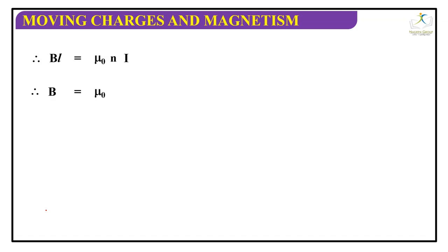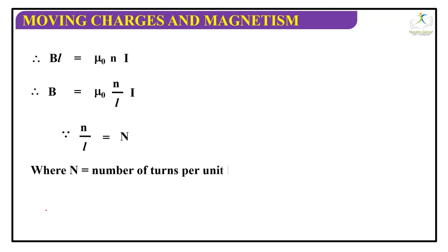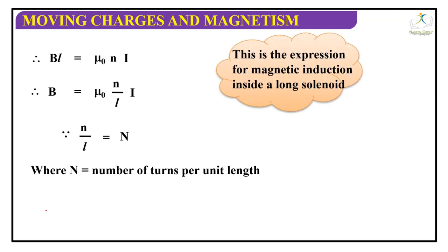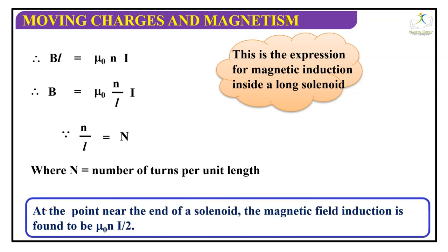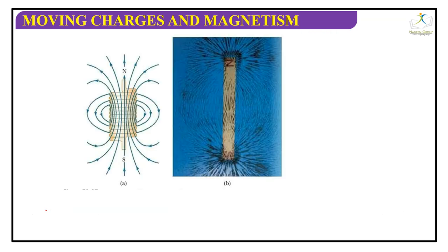Therefore, BL equals μ₀NI, or we can say B equals μ₀(N/L)I, where N/L gives the value of n — the number of turns per unit length. This is the expression for magnetic induction inside the solenoid. At a point near the end of the solenoid, the magnetic field induction is found to be μ₀NI/2.